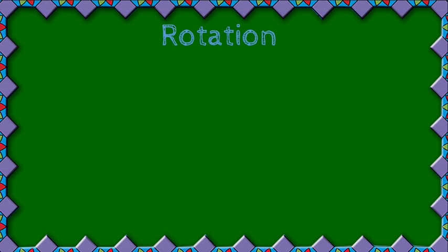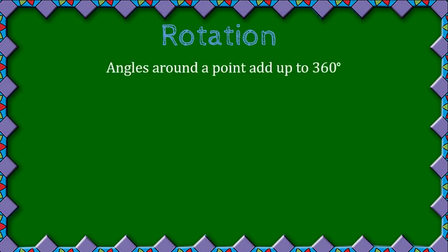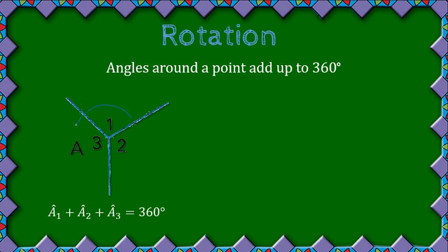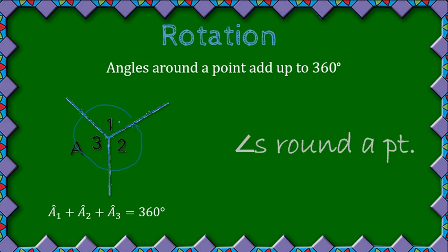Then we have rotation. Rotation angles go right around a point and they add up to 360 degrees. Here we have an example where A1, 2, and 3 go right around — they rotate a full 360 degrees. So any angles around a point will add up to 360 degrees, and the reason is 'angles around a point'.